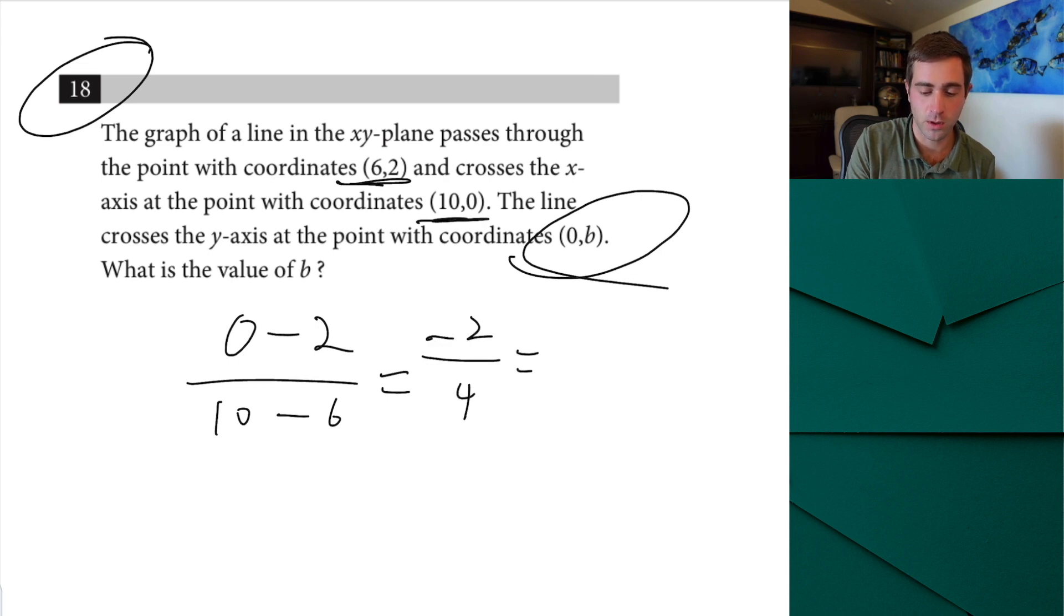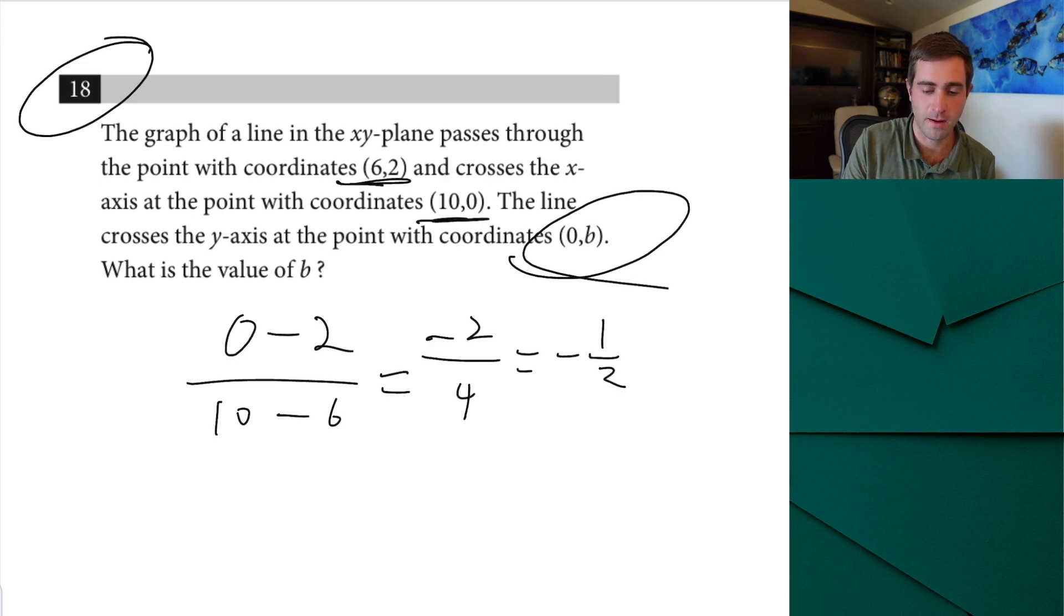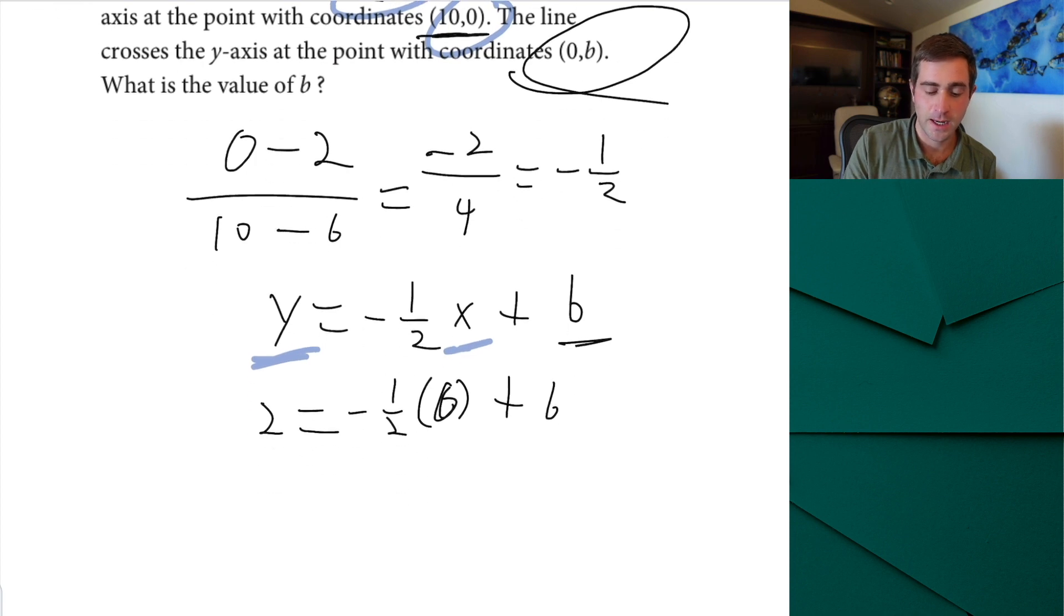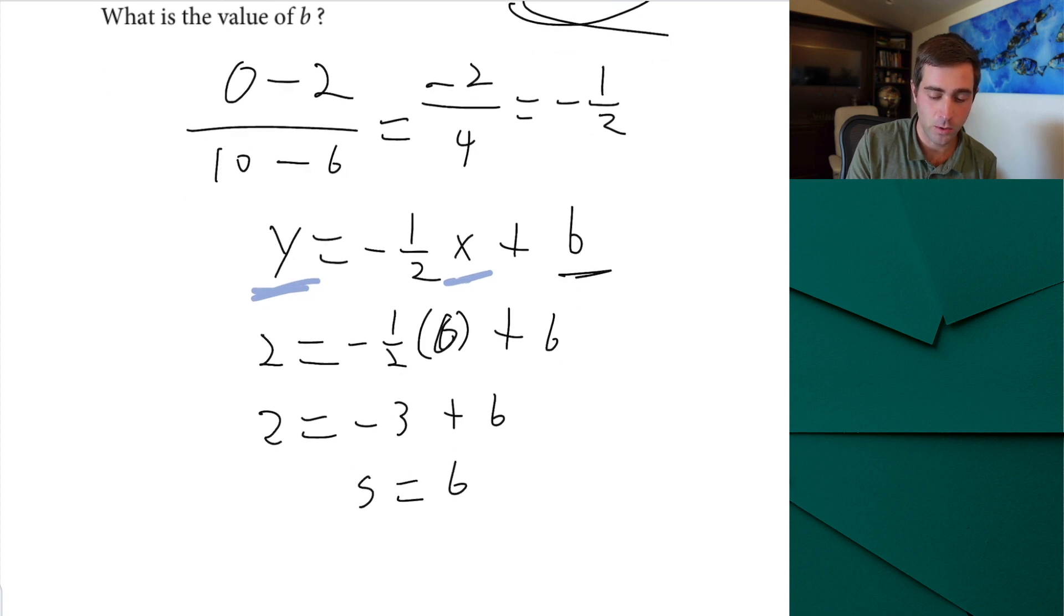So first we'll do y2 minus y1 over x2 minus x1. We always need to know the slope. So this is going to give us negative 2 over 4 which is going to give us a slope of negative 1 half. Now from here the easiest way that I like to do this and sticks for almost all of my students best is I will then write y equals negative 1 half x plus b. Now all we have to do is take either pair of these points. We're just going to plug in the x value and the y value to solve for b. So we're going to use 2 and 6. So we'll do 2 equals negative 1 half times 6 plus b and that's going to give us that 2 equals negative 3 plus b. That's going to tell us that 5 is going to equal b.